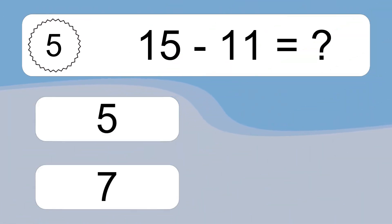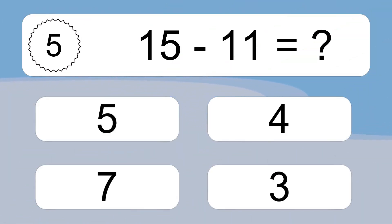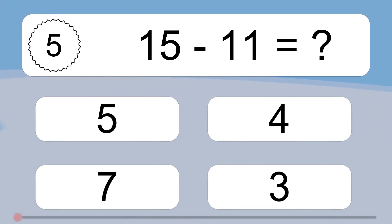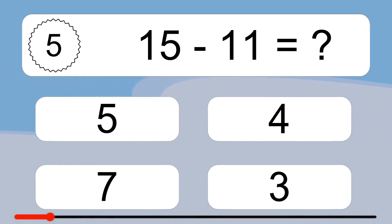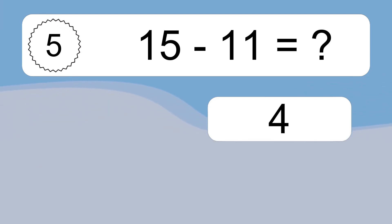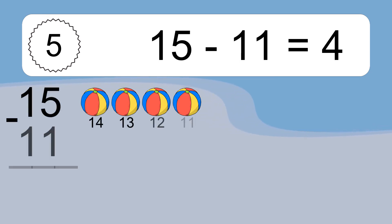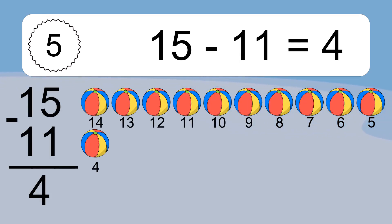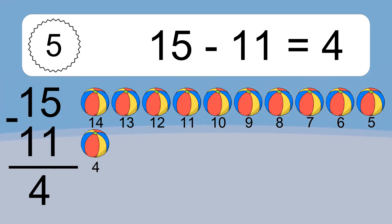15 minus 11 equals what? 15 minus 11 equals 4. Let's count it. 14, 13, 12, 11, 10, 9, 8, 7, 6, 5, 4.